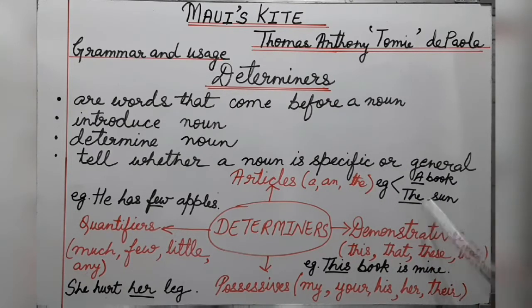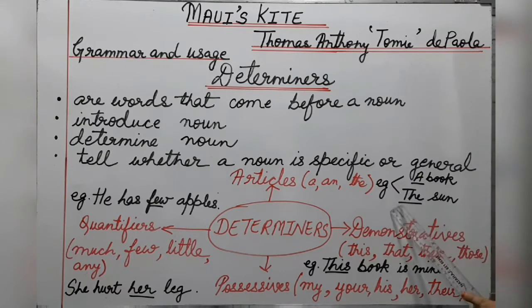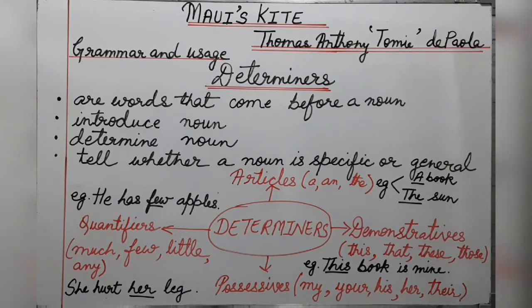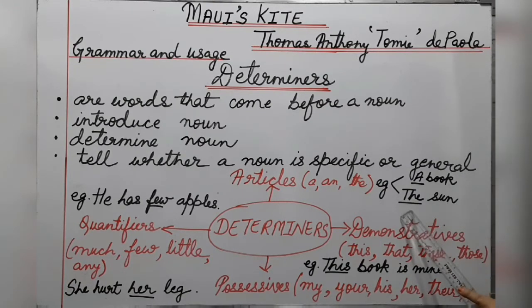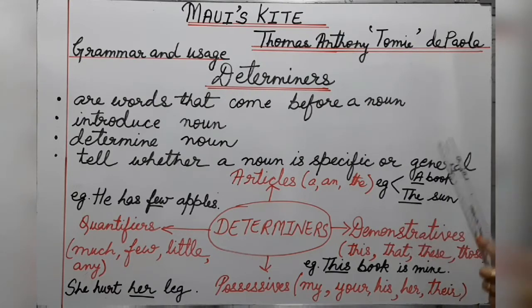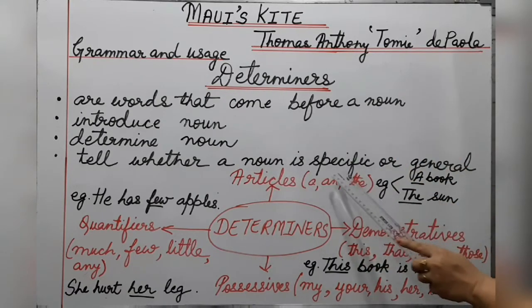Now let's see this example: 'the sun.' The is a definite article. It is introducing 'sun,' which is a noun. When we talk about the sun, we know it is specific. We use 'the' with things that are universal or which are only one. So here 'the' tells us about a noun that is specific.